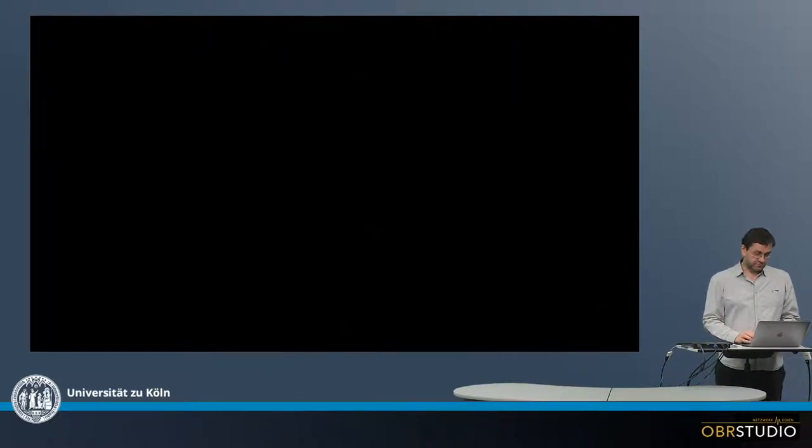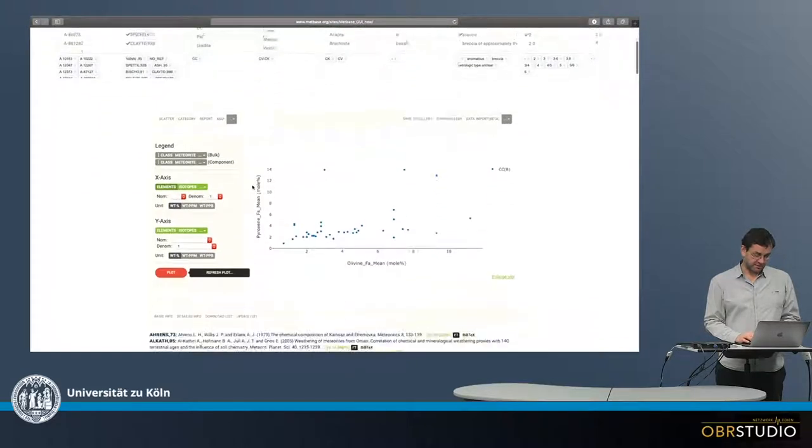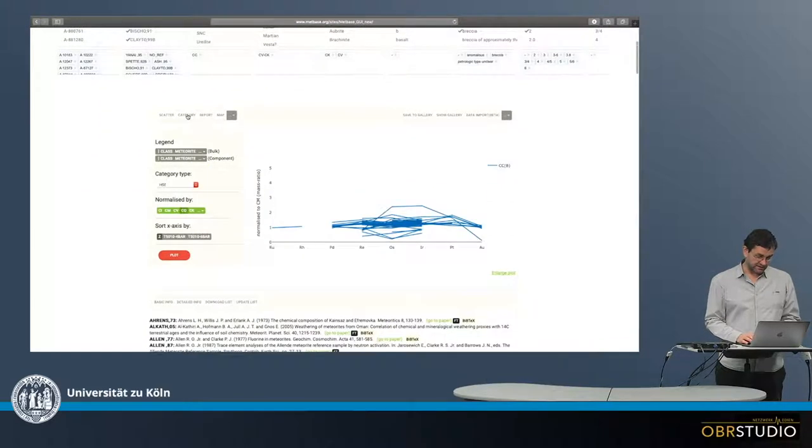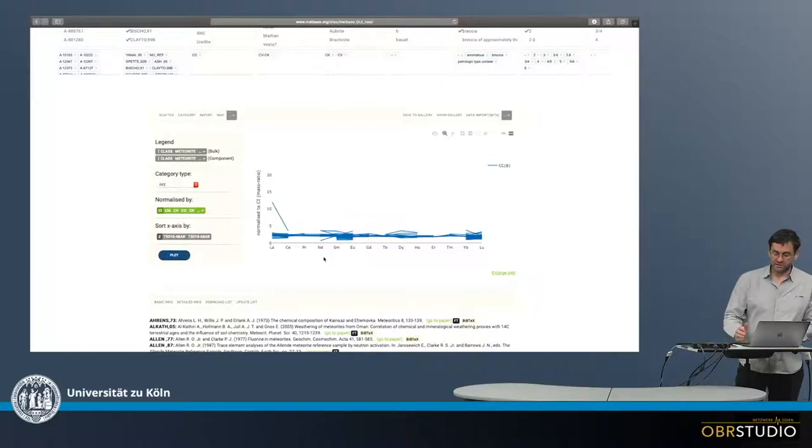So this is MacBase. And just a sec, let's for example choose the CV, CK clan. And I click on category here. And then I get the plot for the highly siderophile elements. So these are the categories, the highly siderophile elements. And then normalize for example to, maybe you see icon right. Looks more sensible. And it would look like this. So you can choose something different. Maybe the rare earth elements. And then these are the rare earth elements.